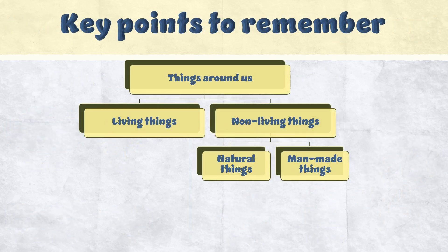Let's once again see how the things around us are categorized. They are broadly categorized between living things and non-living things. Further, non-living things are categorized between natural things and man-made things.